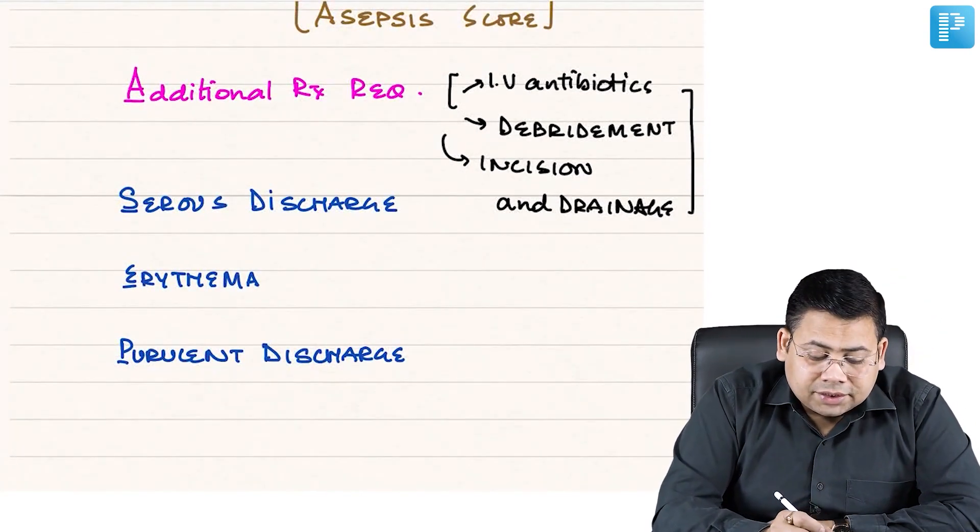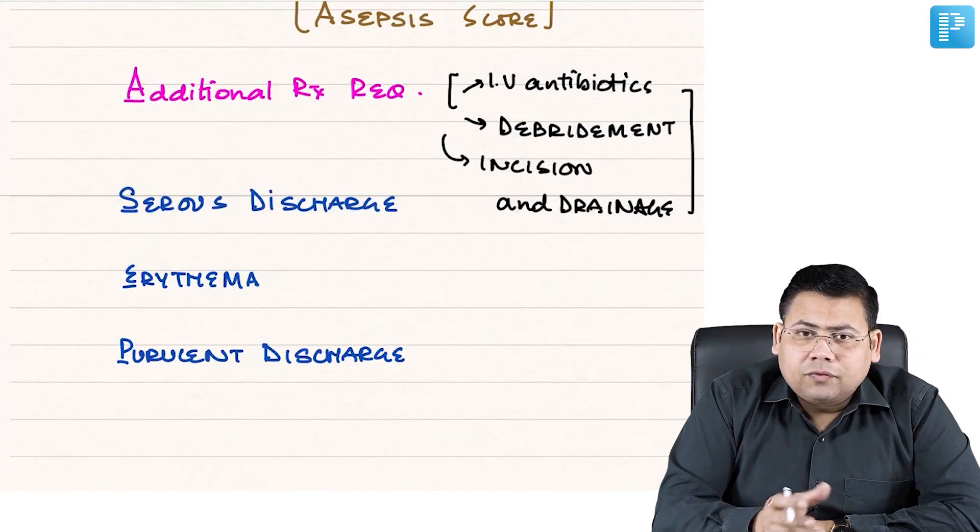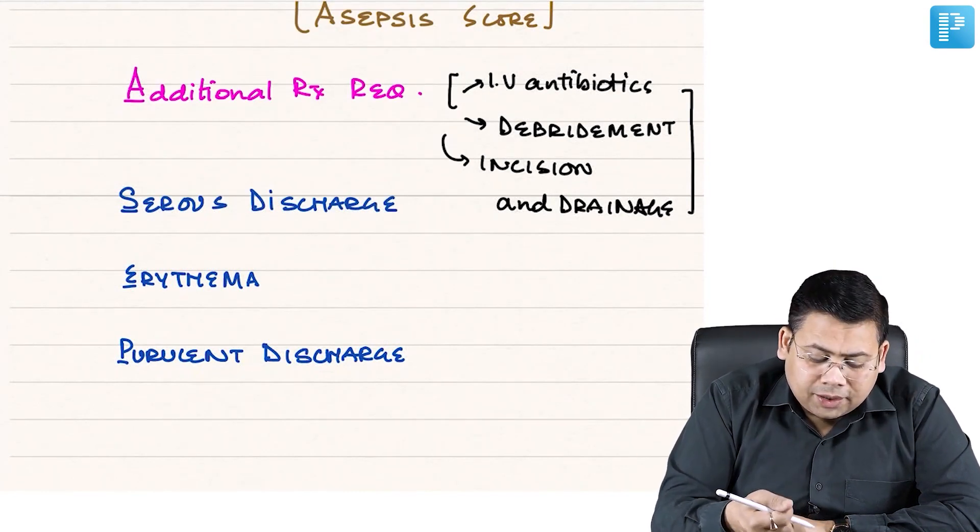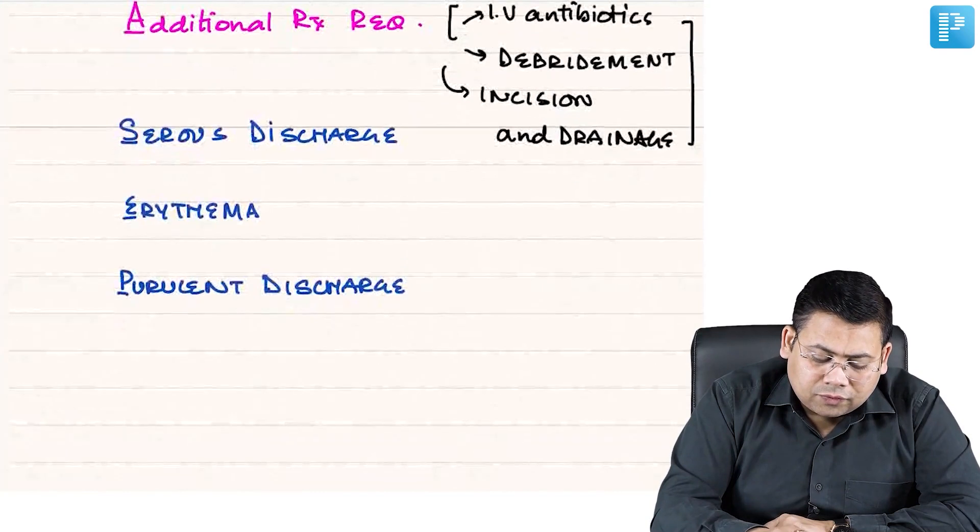If there is purulent discharge, the first point - additional treatment required - you grade from 1 to 10. The remaining you grade from 0 to 5 or 1 to 5.